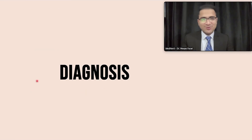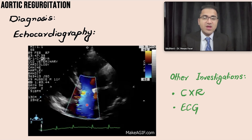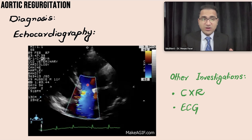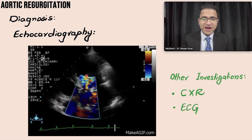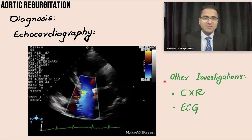For diagnosis of aortic regurgitation, echocardiography is the key investigation. On echo, you can see the left ventricle and the aorta; during diastole, blood gushes back into the left ventricle. Other investigations include chest X-ray and ECG.